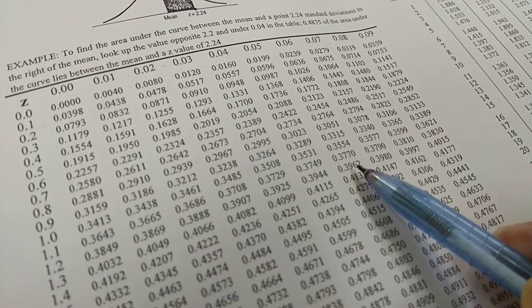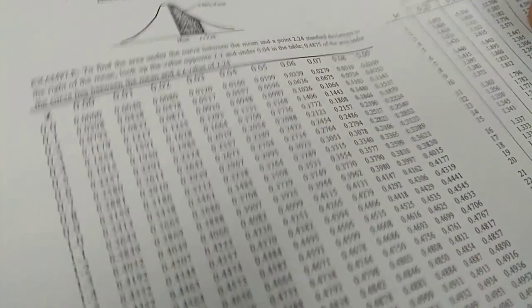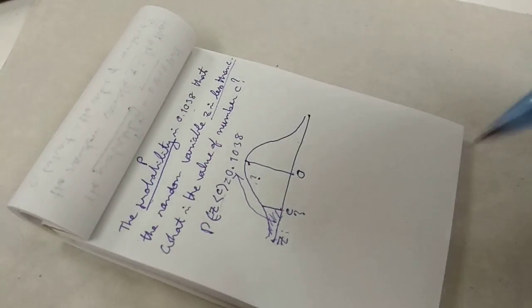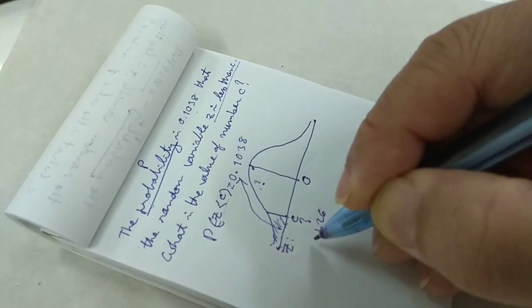Row 1.2, column 0.06 gives 1.26. So C equals negative 1.26. This is the answer.